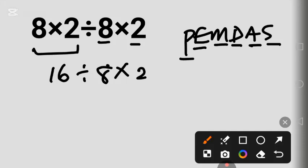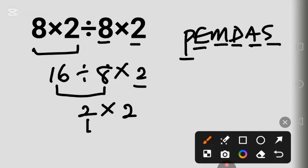16 divided by 8 is 2, and 2 times 2 equals 4. This is the correct answer.